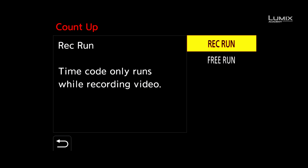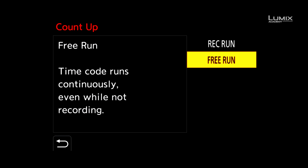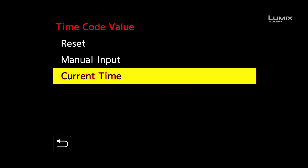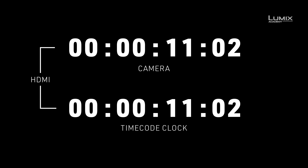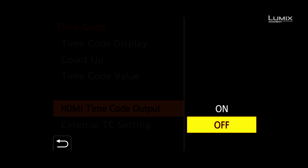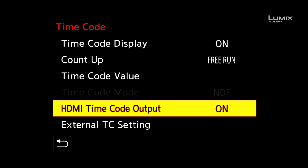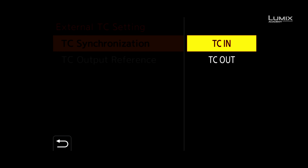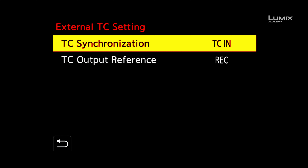For this tutorial, we're going to stick with free run. Timecode value allows you to input a custom timecode value if you're using the camera as the master timecode device. HDMI timecode output allows you to pass timecode to external recorders via HDMI. Lastly, the external timecode settings option allows you to choose either timecode in if you're using an external device like the Tentacle Sync, or alternatively timecode out if you're using the camera as the master timecode device.